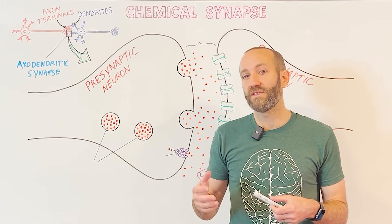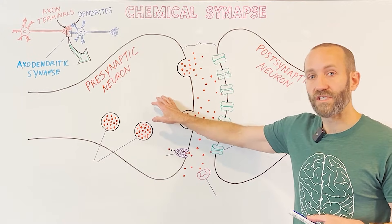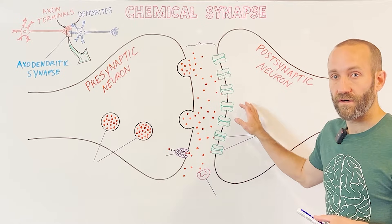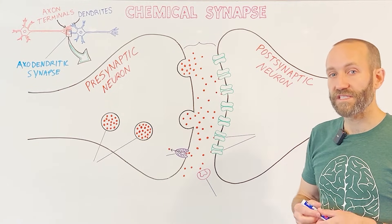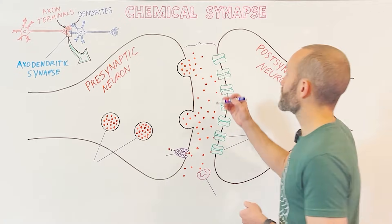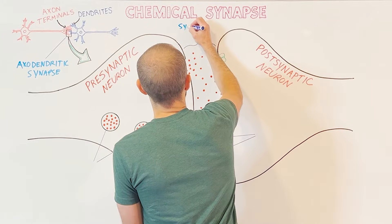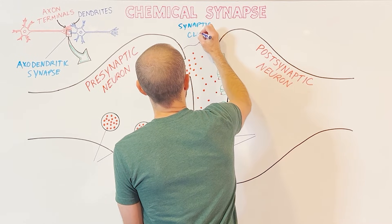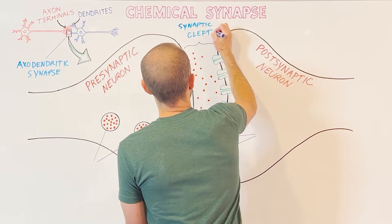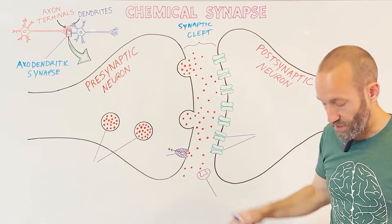So at an axodendritic synapse, the axon terminals of one neuron are situated very close to the dendrites of another. They don't actually come into contact with one another, though. There's a microscopic space separating them. That space is known as the synaptic cleft. And so that's what's pictured here, the synaptic cleft.